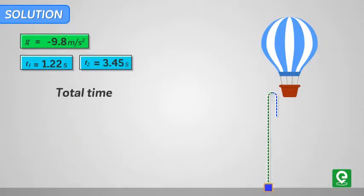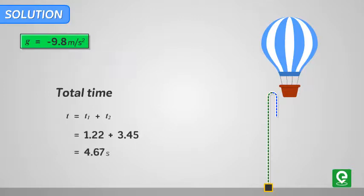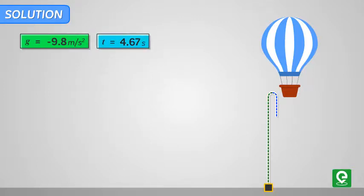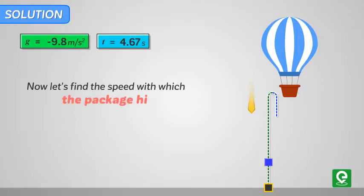Hence the total time the package takes to reach the ground from the moment it's released from the balloon is t1 + t2. On substituting the values we get t equal to 4.67 seconds. Now let's find the speed with which the package hits the ground using the first equation of motion: -v = u - gt.